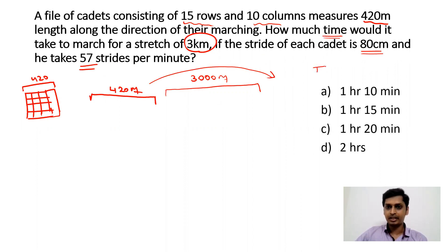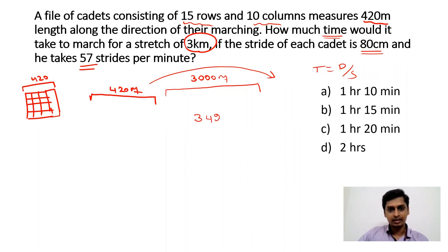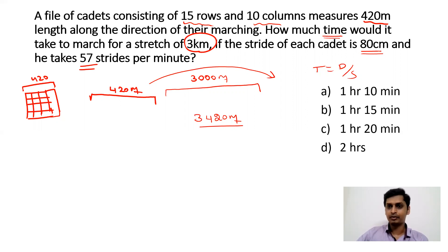Time equals distance divided by speed. The total distance is 420 plus 3000, that is 3420 meters, divided by speed. Their speed is 80 centimeters per stride and in one minute they take 57 strides.